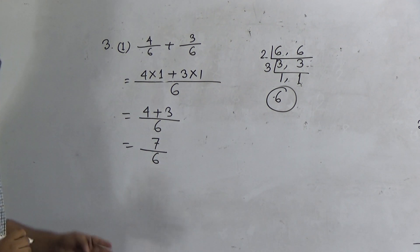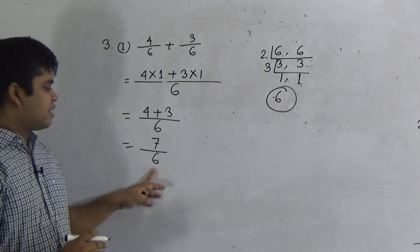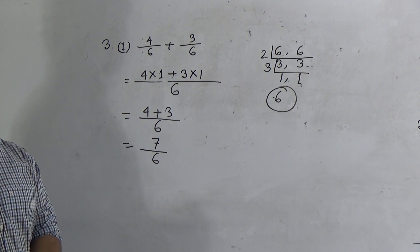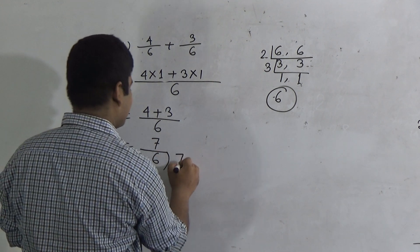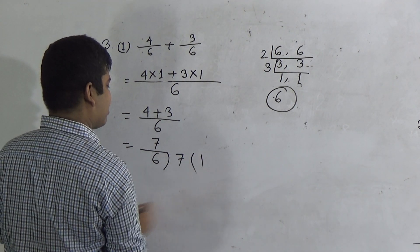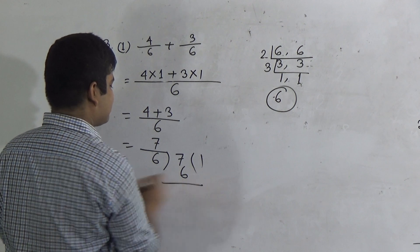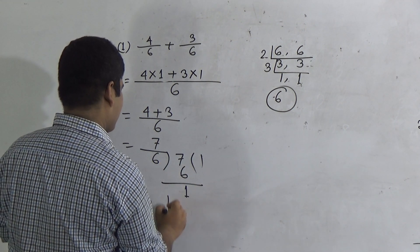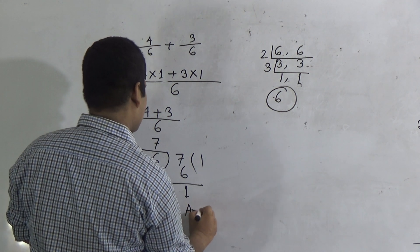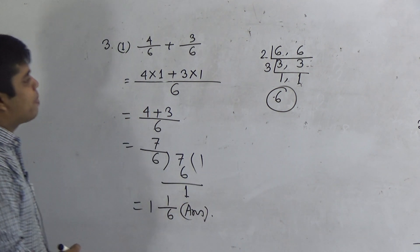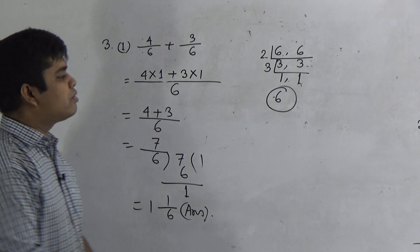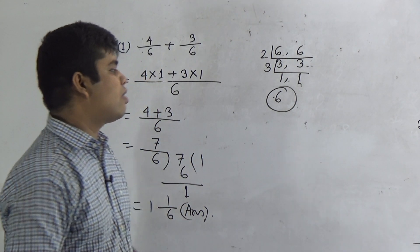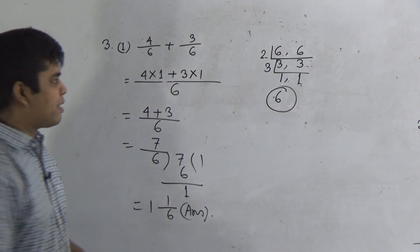Now we get 7/6, which is an improper fraction. We want to convert this into a mixed fraction. In 7, 6 goes 1 time — 6 ones are 6 — and subtracting we get 1. So the answer is 1 and 1/6. I hope you have understood how to do addition. Just like this, we shall solve question number 7.